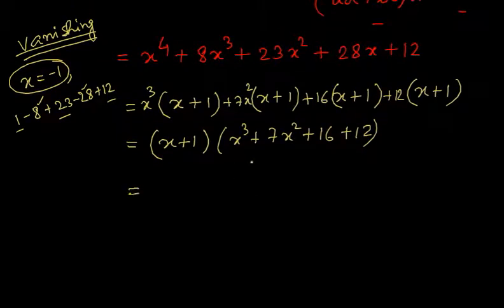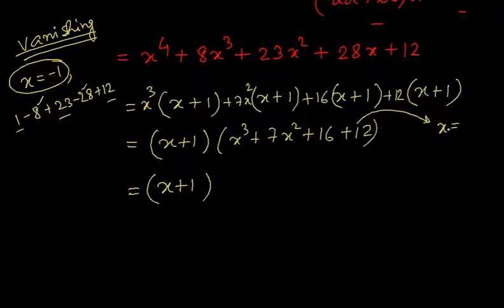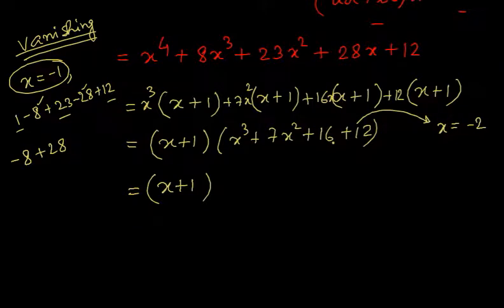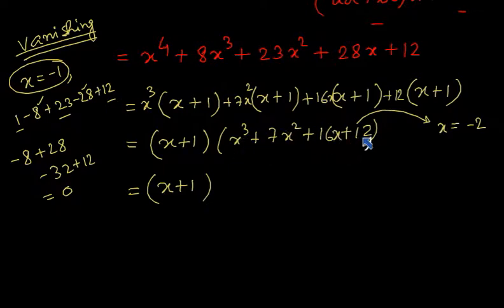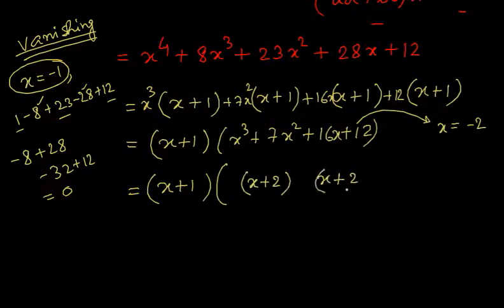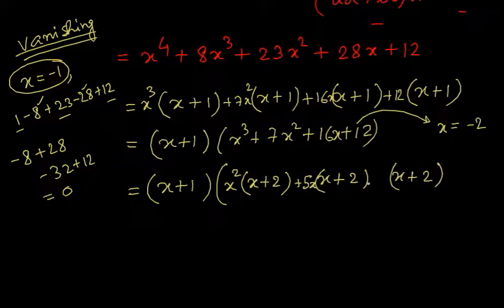For this cubic, by trial we can find a root. It is going to be X equal to minus 2. Putting X = −2 gives minus 8 plus 28 minus 32 plus 12, which comes out to be 0. So for this cubic polynomial X = −2 is a root, meaning (X + 2) is a factor. Dividing by (X + 2) and balancing, we get X², 5X, and 6.